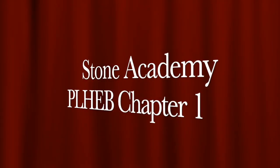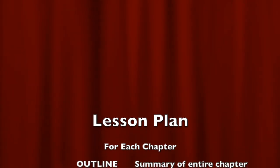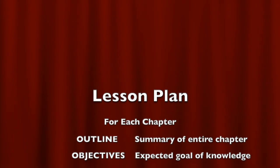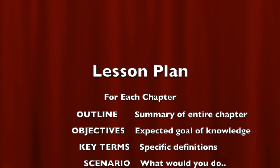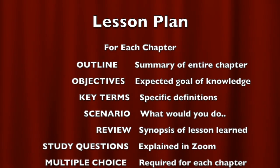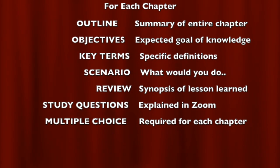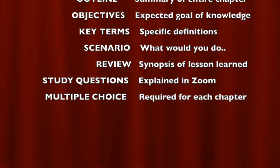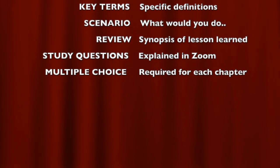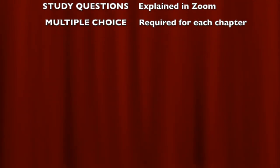This is Stone Academy for Phlebotomy Chapter 1. This is the lesson plan. Every chapter will have an outline — a summary of each chapter — objectives, which is the expected goal of knowledge I want you to learn, key terms with specific definitions, a scenario where I would want you to answer what you would do, review questions we will go over on Zoom, multiple choice that will be required of you, and a chapter review that sums up the chapter so you can answer the multiple choice questions.